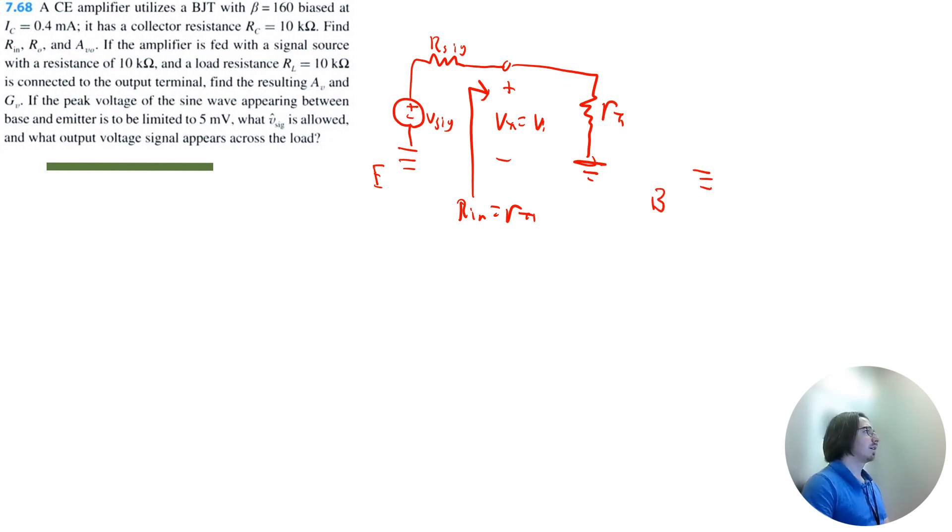Now we're at the base. And here we have a dependent current source equal to gm·vπ. And we have our node here to our collector resistance. So this would be the collector terminal.